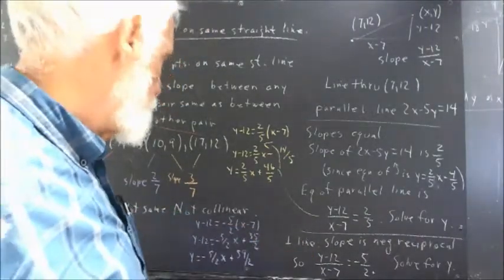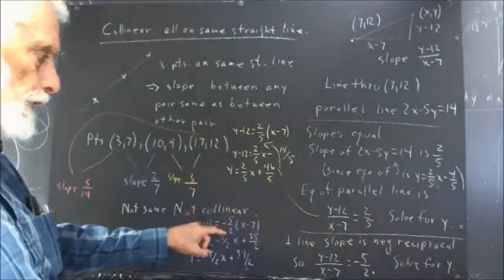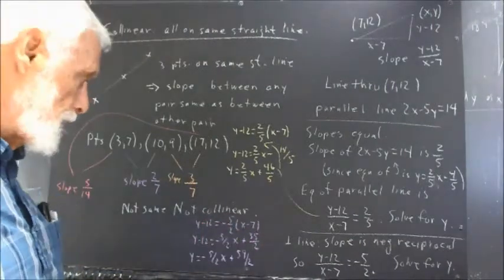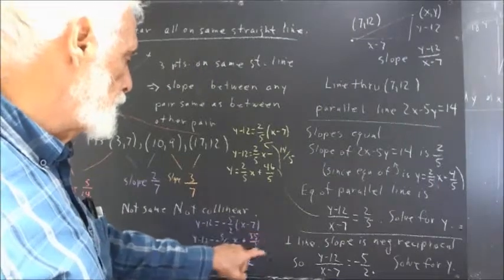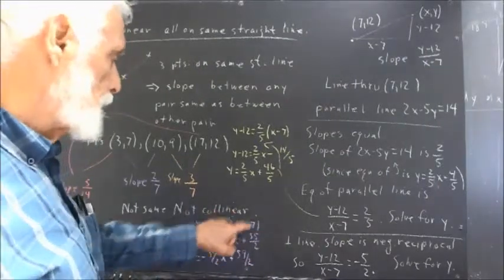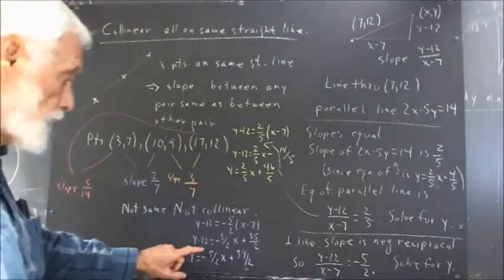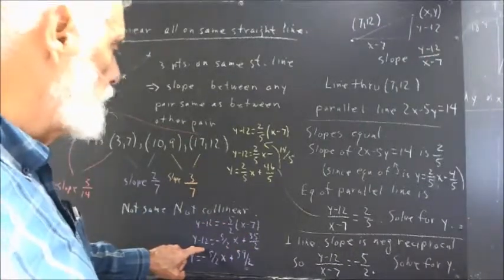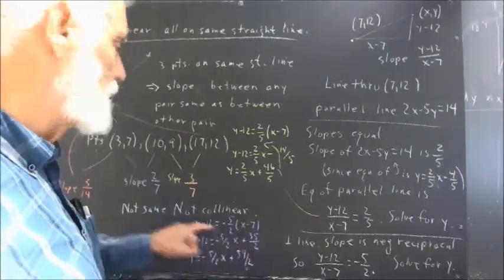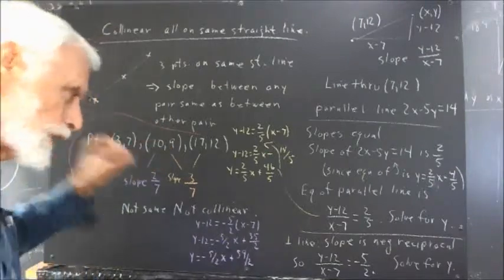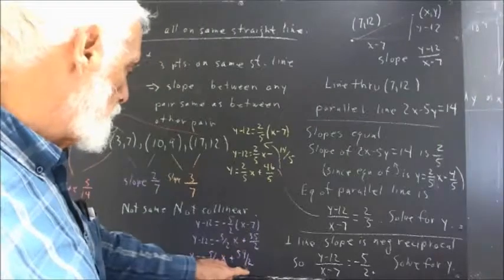The other equation, multiply both sides here by x minus 7. I get y minus 12 is negative five-halves times x minus 7. Distributing, I get negative five-halves x plus 35 halves, 5 times 7 being 35, divided by 2, negative times negative, being positive. I add 12 to both sides. 12 is 24 halves. 24 and 35 is 59, so I get 59 halves.